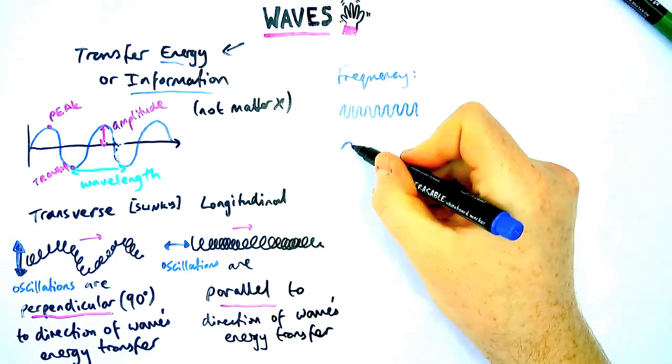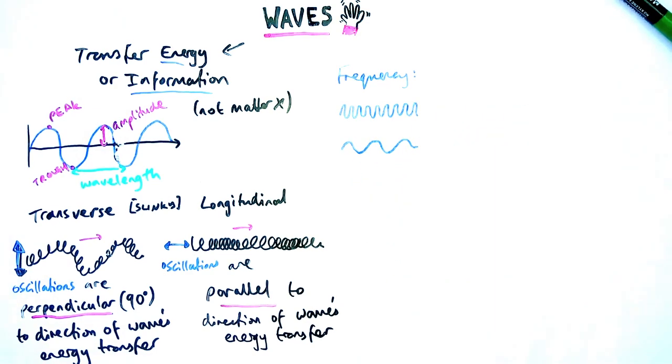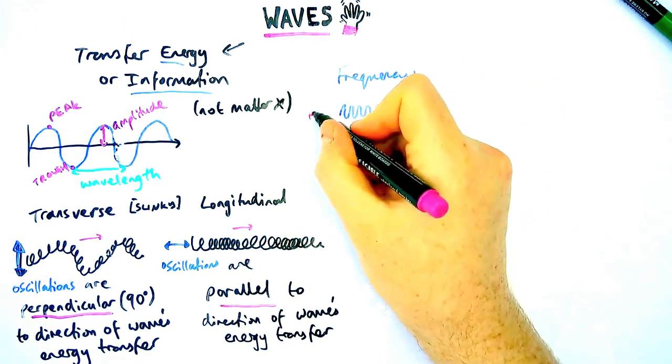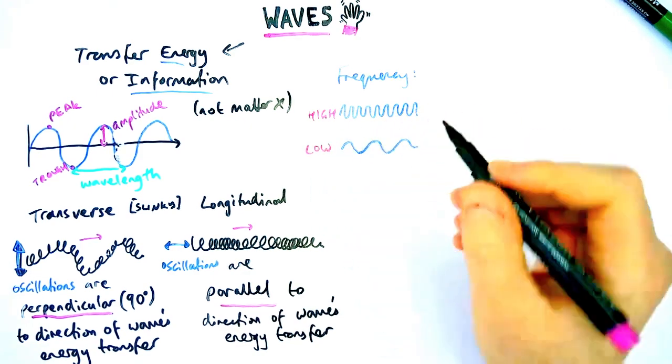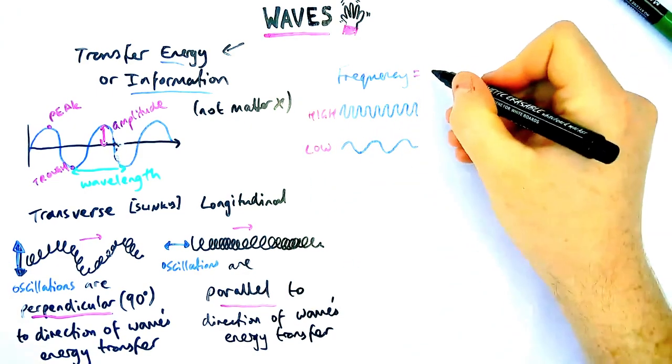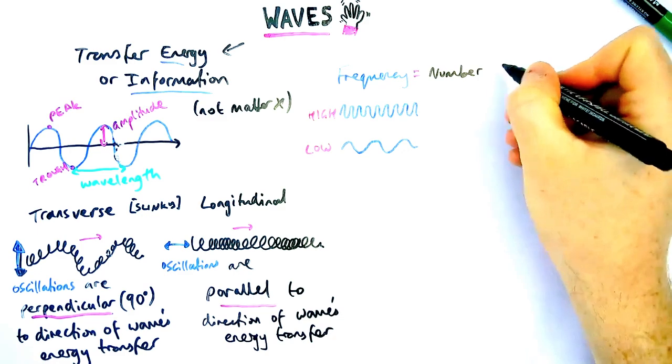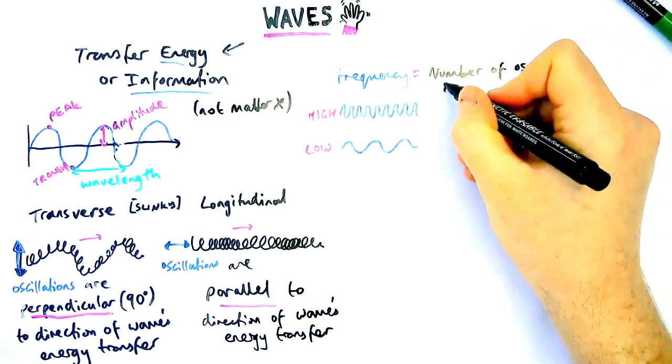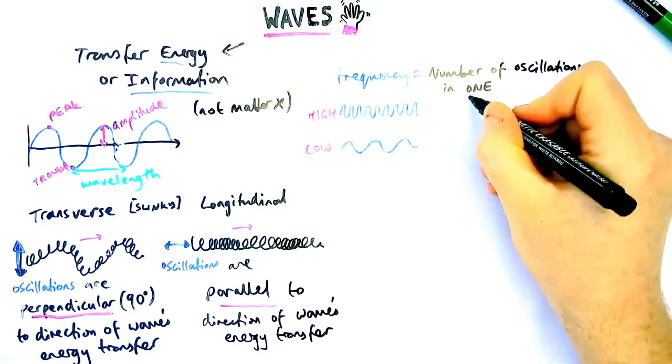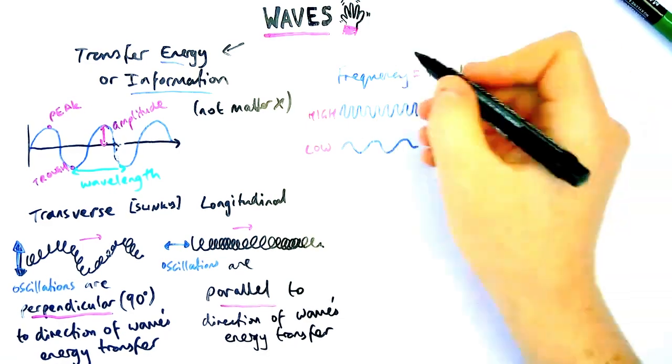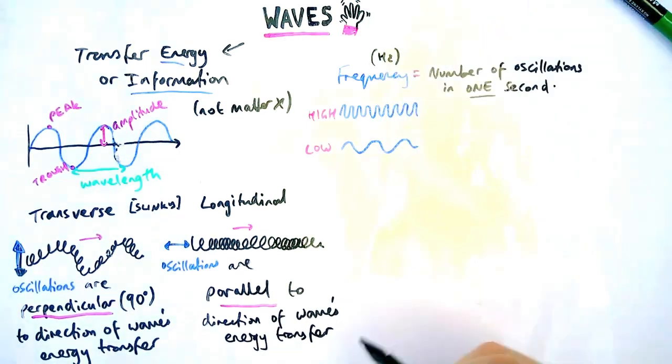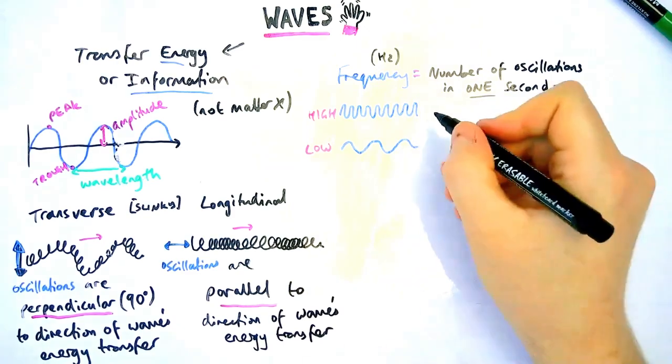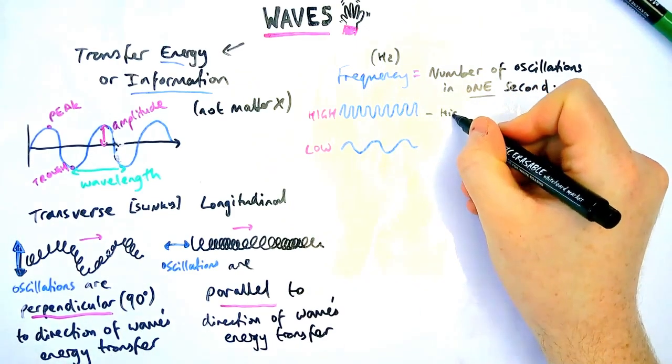Now, you need to know also about the frequency of a wave. So if a wave has a high frequency, it looks like this diagram here. And if it has a low frequency, it looks like this diagram here, with a bigger wavelength for a lower frequency. Frequency we define as the number of waves or the number of oscillations in one second. So you can see on the high frequency, I've got lots more waves than the low frequency. And it's measured in hertz, HZ.